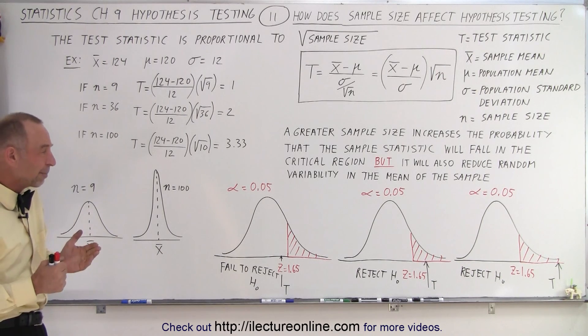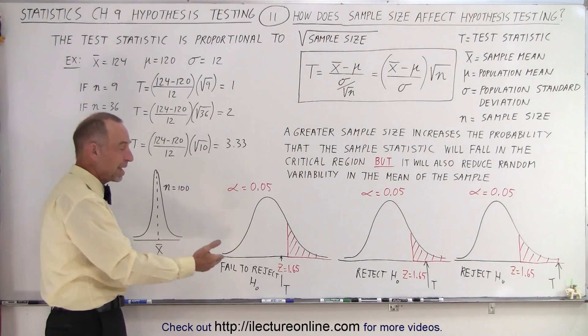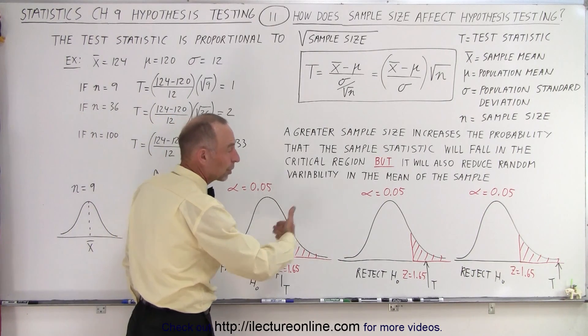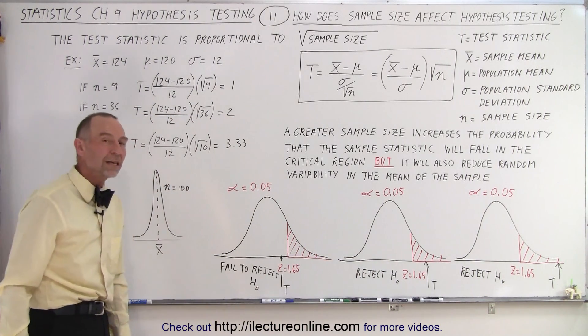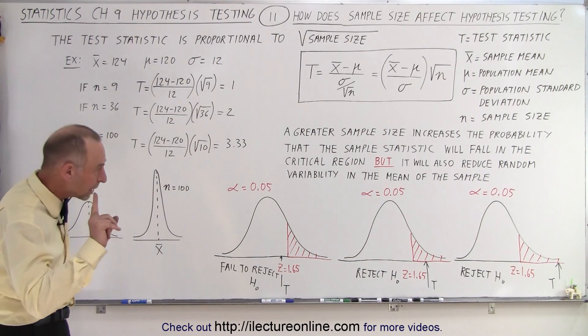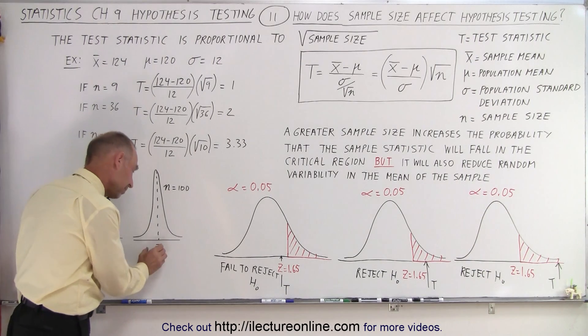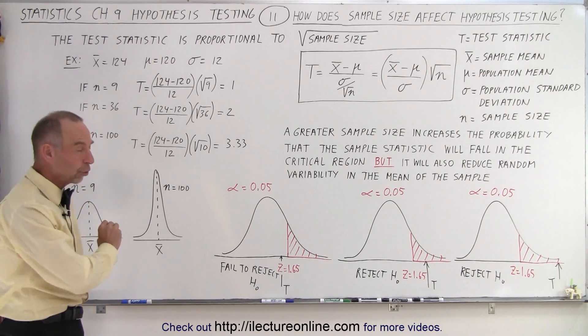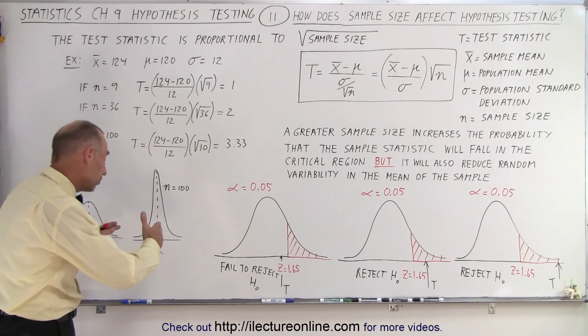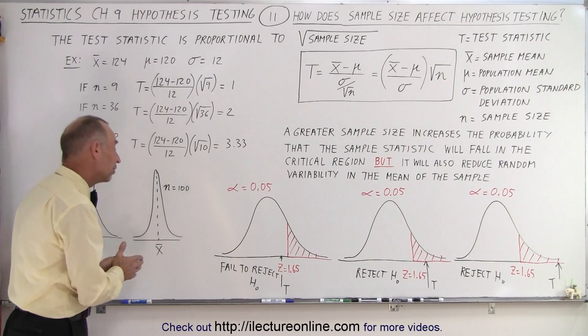And so large sample sizes do two things. First of all, it makes the test statistic larger, you're more likely to fall into the critical region, but only, only if the mean also shifts into that region because the mean will tend to be a smaller value.